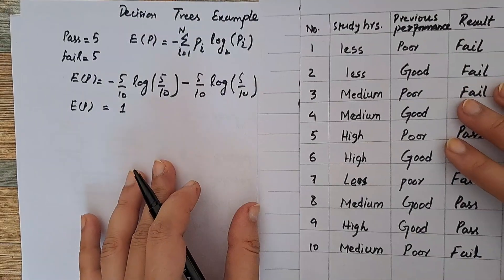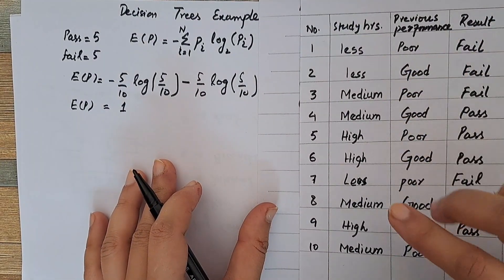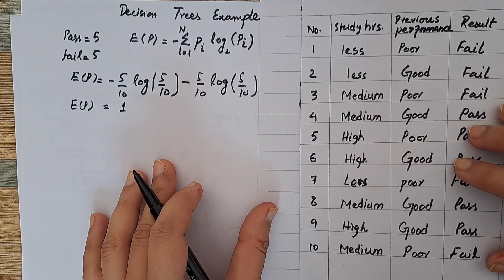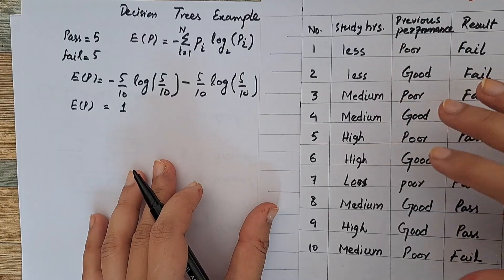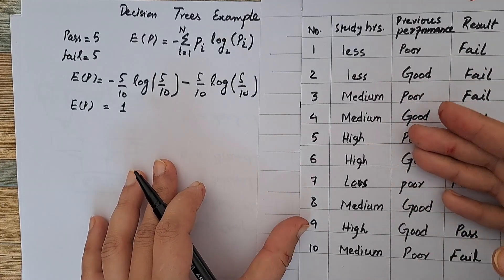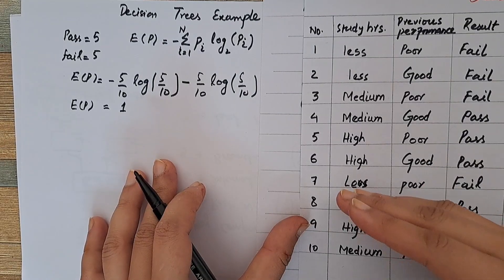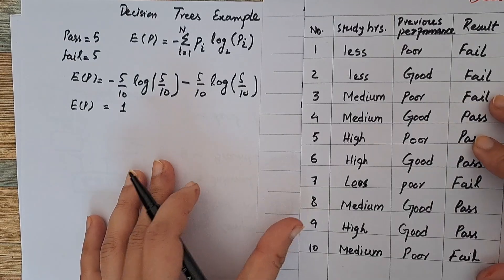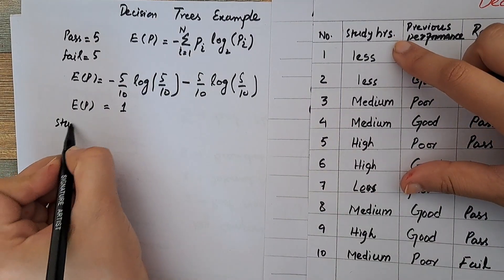The next step is to decide which feature will act as the root node. To determine that, we need to evaluate the entropy of both feature vectors as well as their information gain. Whichever information gain is greater will act as the root node. Let's consider the first feature vector, which is study hours.